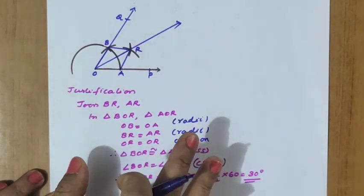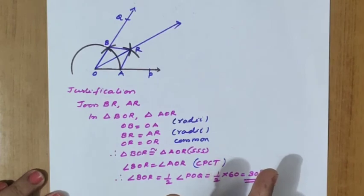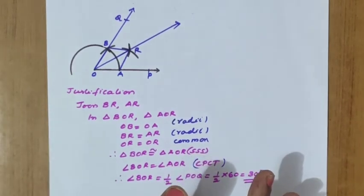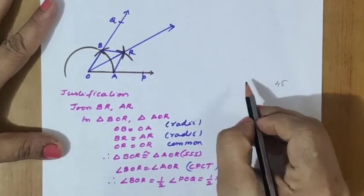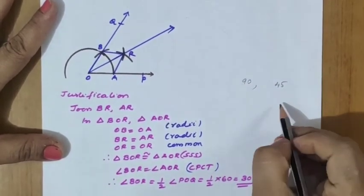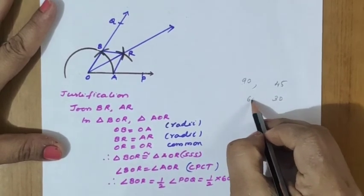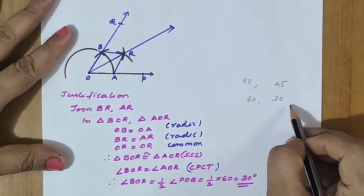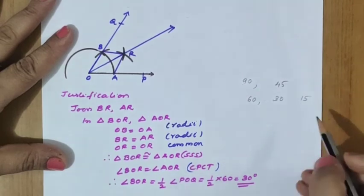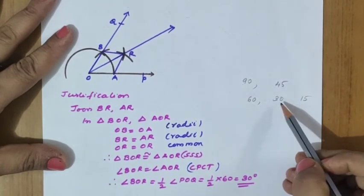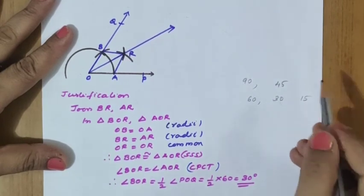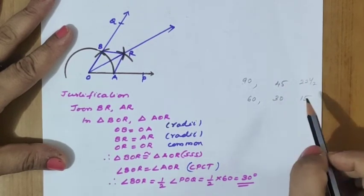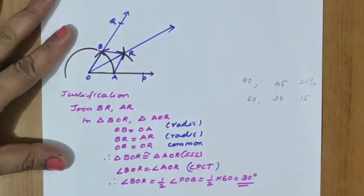Summary: for 90 degrees, bisecting gives 45 degrees. For 60 degrees, bisecting gives 30 degrees. To get 15 degrees, first construct 60, then bisect to get 30, then bisect again to get 15. Similarly, bisecting 45 gives 22.5 degrees. By continuous bisection we can obtain the next smaller degree angles.